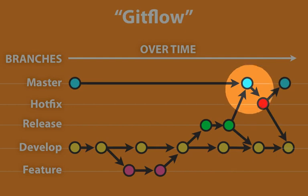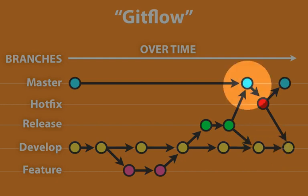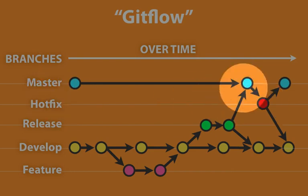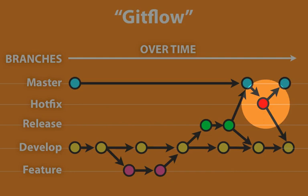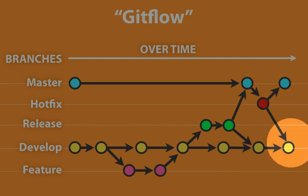Now some bugs are so important that they can't wait for the development branch to be ready for a new release. So a solution to this is to create another type of branch called a hotfix branch. What this does is it branches directly from master, so it's got the same code base, and then you make modifications to fix the bug, and then you merge it back with master, creating a new minor release of your software, application, or website, and then you bring it back into development so that it gets incorporated in the next release.